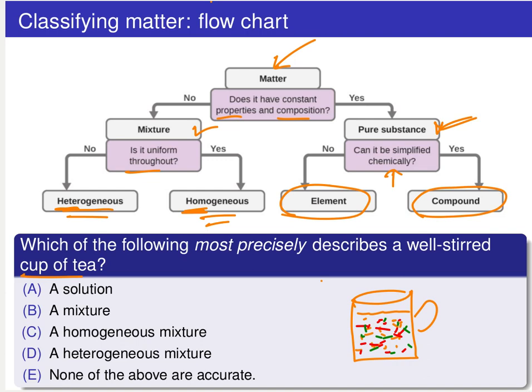Well certainly we are dealing with a mixture because we have more than one type of matter present. Specifically, we have sugar, the different flavor molecules, whatever that might be, tea leaves, who knows what. We of course have water, H2O, a whole bunch of stuff in there. So there's certainly a mixture, but we want to come up with the most precise description. So we want to classify that mixture. So it certainly is a mixture, but we can do a better job to get it nice and precise.